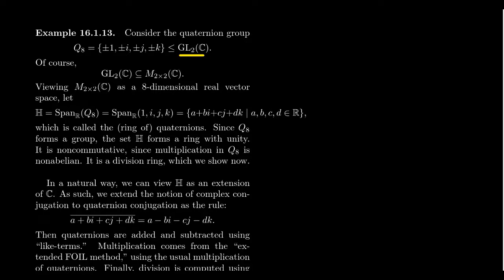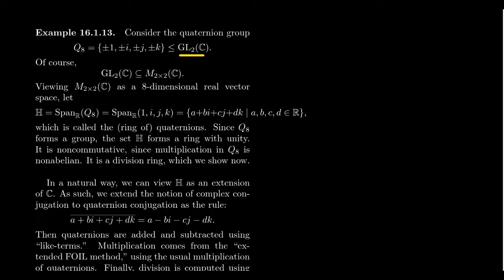So what we're going to do is construct the subspace of 2×2 complex matrices spanned by four matrices. We're going to take the span, as a real vector space, of the matrices 1, i, j, and k. We don't need to include minus 1, minus i, minus j, minus k, because the span takes all linear combinations, including negative multiples. So if we take the span of the quaternion group, we get the so-called quaternion ring.